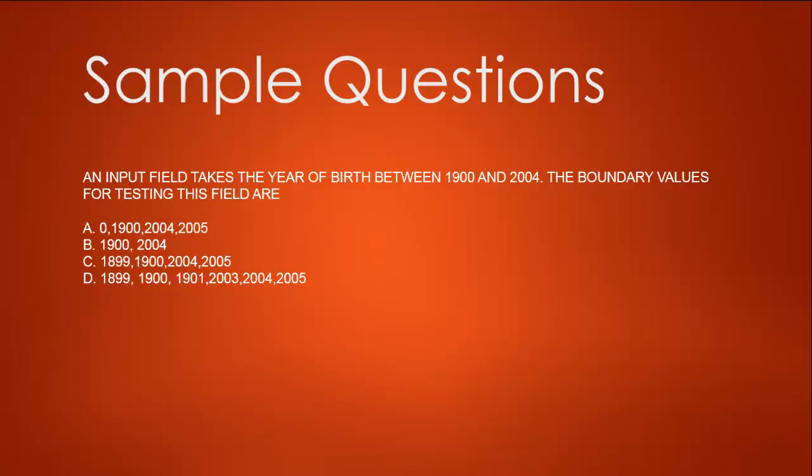So option C looks closer to our answer. When checking for boundary values, always think of one value less than and one value greater than the limit. Option D — 1899, 1900, 1901, 2003, 2004, 2005 — looks more like an equivalence testing answer, not boundary value. So answers A, B, and D are wrong. Answer C is correct.